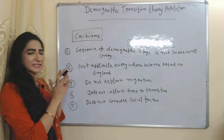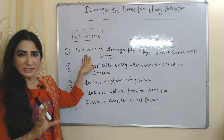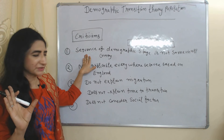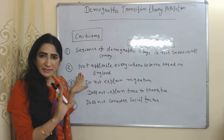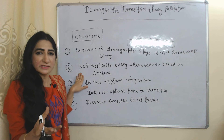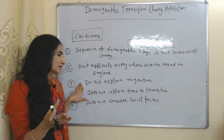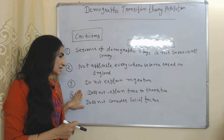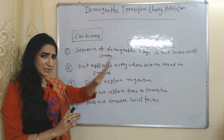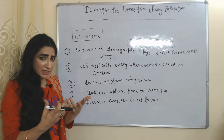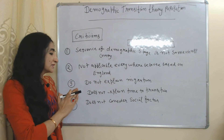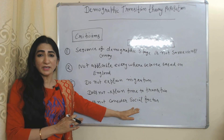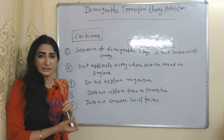Now we will see the criticism of this theory. This theory talks about three stages, but the sequence of stages is not the same in every country. It is not applicable everywhere because it is based on experiences of England. It doesn't explain migration, which is a primary factor in population growth. It doesn't explain the time taken to transition from one stage to another, and it doesn't consider social factors such as women's education, which plays a very important role in controlling birth rate.